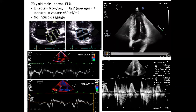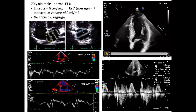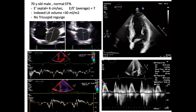Case example 4: 70-year-old male, normal ejection fraction. Septal e' is 6, average e' is 7, LA volume index is 30 mL/m², no tricuspid regurgitation, but E/A ratio is 0.8. This is impaired relaxation — or rather, age-related normal diastolic function. I would not even call this diastolic dysfunction.